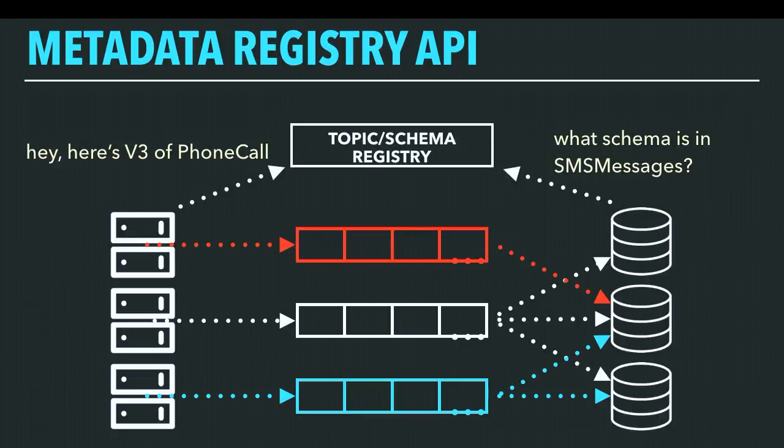Storing the record schemas and all of the additional metadata about uniqueness, ordering, and correctness in this registry lets us access that information programmatically from any system that's going to produce or consume records. It's important to note that this schema registry service doesn't actually handle any records itself — it just stores the schemas, validates that new versions of schemas are compatible with the previous ones, and then serves that metadata back out to any system that needs it.